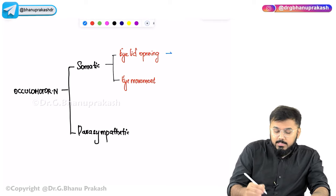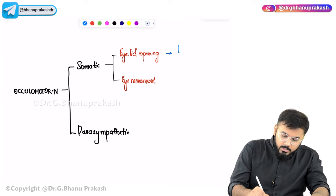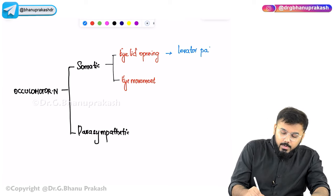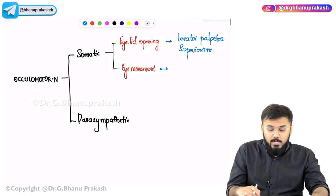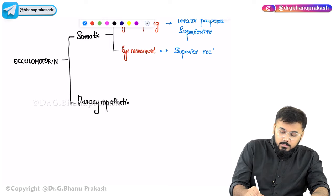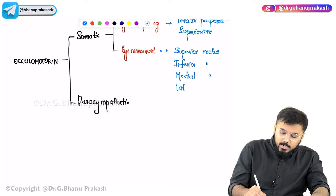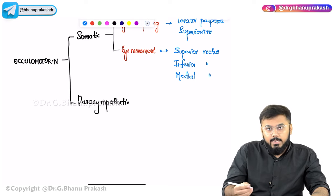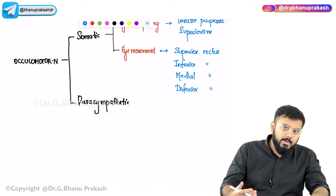For eyelid opening, the muscle is levator palpebrae superioris. For eye movement, CN III supplies superior rectus, inferior rectus, medial rectus, and inferior oblique. Superior oblique and lateral rectus are not supplied by CN III — and this brings us to the mnemonic LR6 SO4 R3.